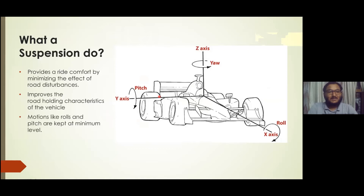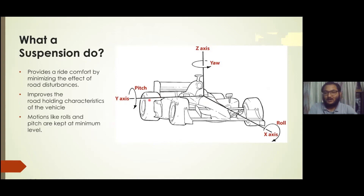Basically, the suspension system provides ride comfort by minimizing the effect of road disturbances, and it improves the road-holding characteristics of the vehicle. Motions like roll and pitch are kept at a minimum by the suspension system. If this is the longitudinal axis of the vehicle — the x-axis — and the vehicle rotates about this axis, then it is known as rolling.